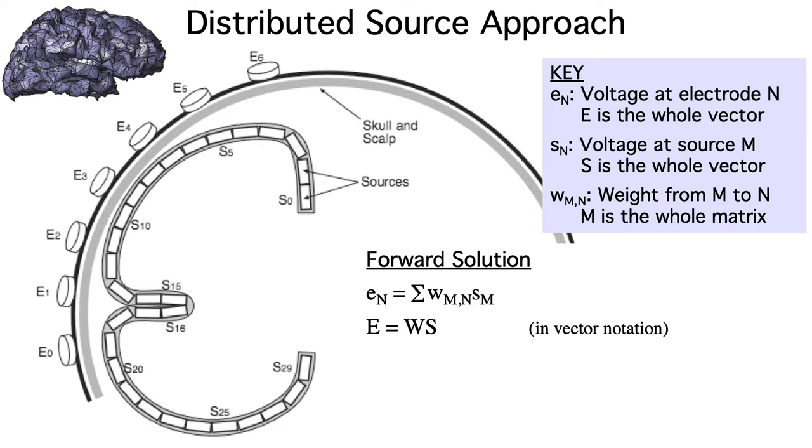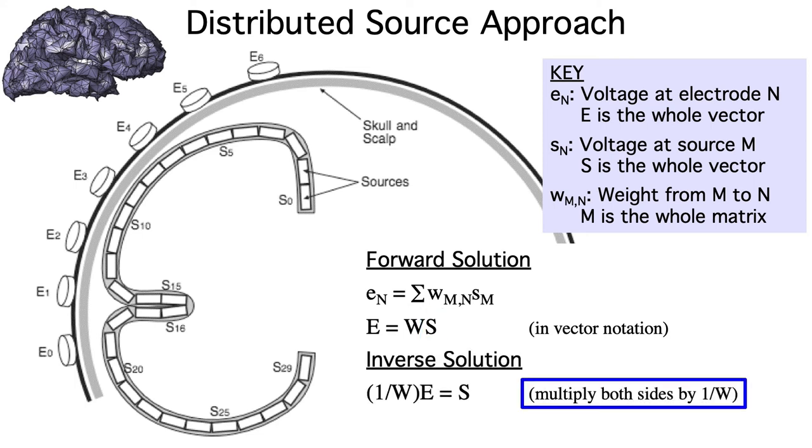If you're familiar with linear algebra, this should be pretty obvious. If not, don't worry about it because it's roughly analogous to standard algebra. By expressing the forward solution this way, it's easy to see how we can compute the inverse solution. We're trying to solve for the magnitude at each source at a given time point, given the observed voltage at that time point and the weights. To do this, we just multiply both sides of the equation by 1 over W, which is the inverse of the W matrix.